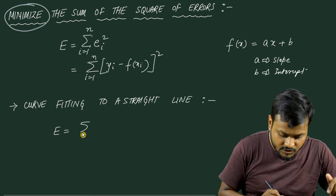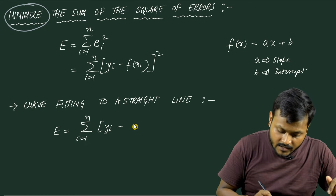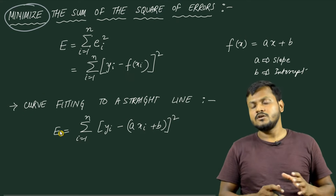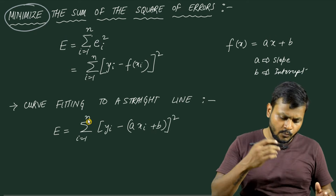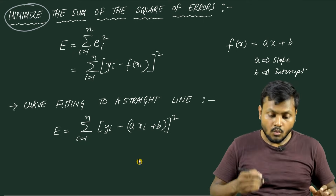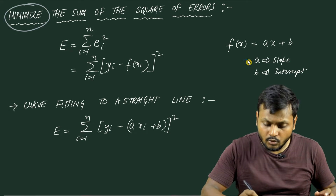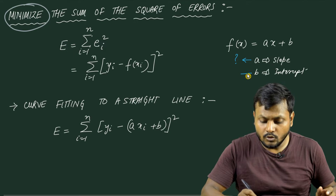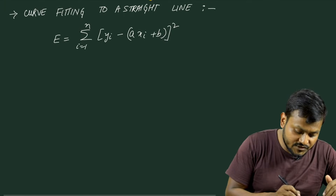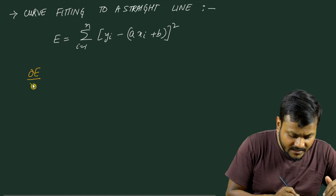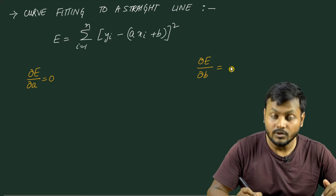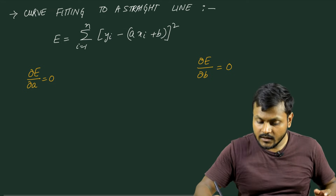For the straight line case, capital E becomes E = Σ(y_i - (ax_i + b))², summing from i=1 to n. This represents the total squared errors associated with the observational data, and I want to minimize it. Here, y_i and x_i are the known observational data. The unknowns are a (the slope) and b (the intercept). So I minimize with respect to both: ∂E/∂a = 0 and ∂E/∂b = 0.